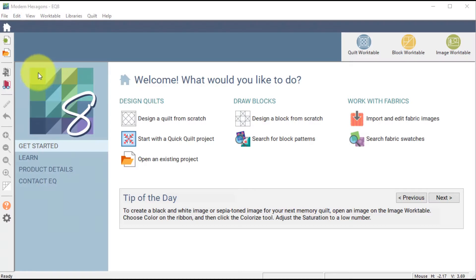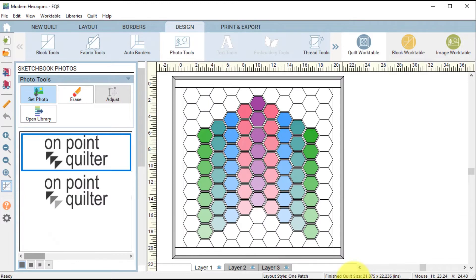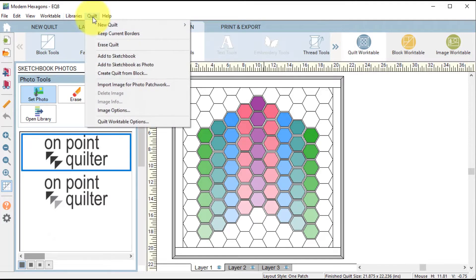On the home screen of my Modern Hexagons project, I'm going to view the project sketchbook, and on the Quilts tab, take the quilt that I designed during that last blog post and select Edit. I'm going to make a note of the size, which is 21.875 x 22.236, and I am going to then do a quilt, Add to Sketchbook as Photo.